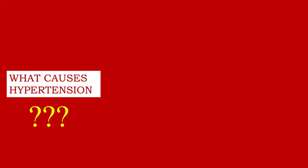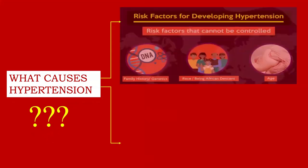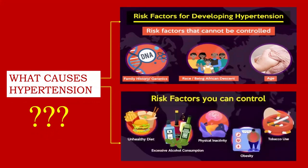So what causes hypertension? The risk factors can be divided into non-modifiable risk factors, which include family history, genetics, race, and age, and into modifiable risk factors, which include unhealthy diet, excessive alcohol consumption, physical inactivity, obesity, and tobacco use.